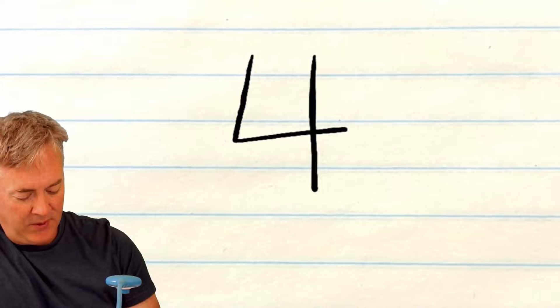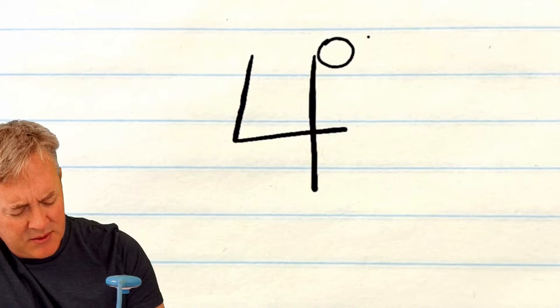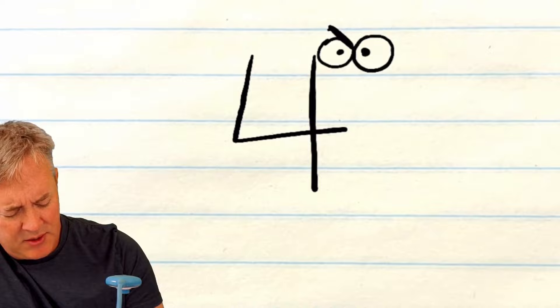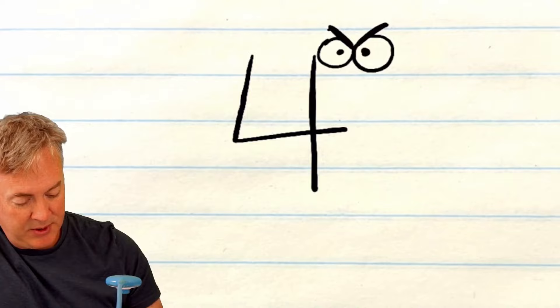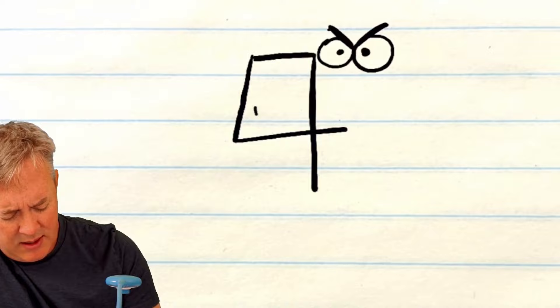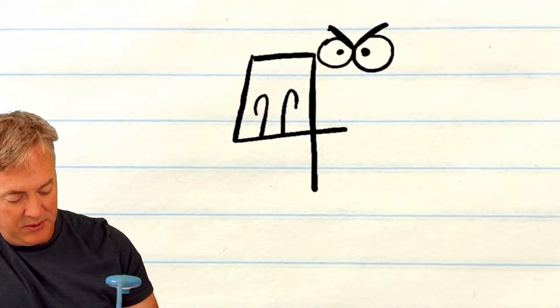I'm gonna start with number four. The first thing I'm gonna do is draw the monster eyes, so I'm gonna draw some eyes right here, and some angry monster eyebrows. Next we're gonna draw the monster's nose - that's pretty simple, we're just gonna draw a line that goes across the top of the four and then these little curved lines for the nostrils.